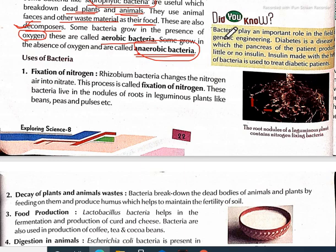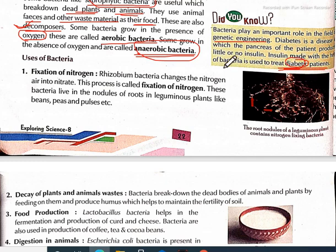Bacteria play an important role in the field of genetic engineering, so they are not only disease-causing but also useful. Diabetes is a disease in which the pancreas produces little or no insulin. Insulin made with the help of bacteria is used to treat diabetic patients — so bacteria are very useful here.